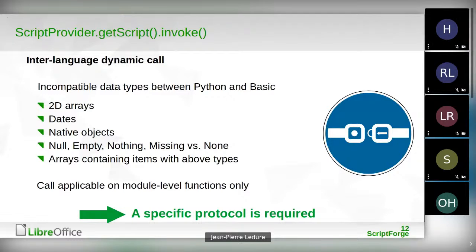A critical issue is dates: every language, database, Calc, and application has its own internal representation of dates. Also, native objects cannot be transferred from one environment to the other — you cannot transfer a Basic object to Python or a Python object to Basic. So we had to define a protocol. The protocol is not very complex but it handles things like data types. All dates are transferred as the UNO time data type for both arguments and return values.